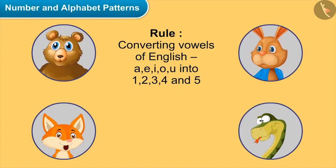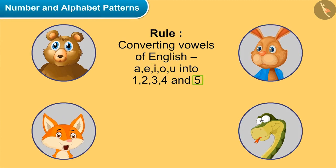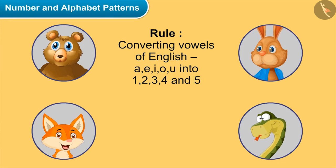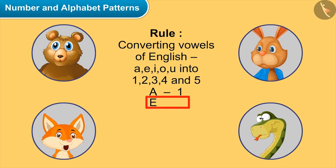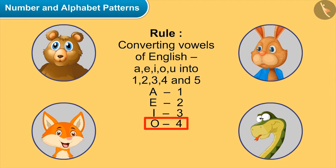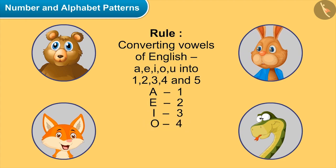We can convert the vowels of English — A, E, I, O, U — into 1, 2, 3, 4, and 5. So we will convert A to 1, E to 2, I to 3, O to 4, and U to 5.